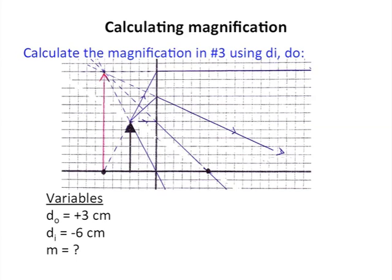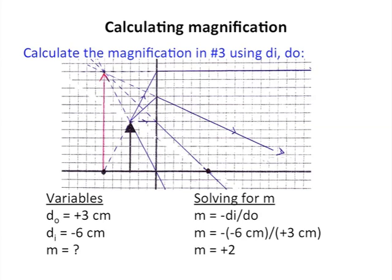An example: calculate the magnification in number 3 using image distance and object distance. The object distance is positive 3. The image distance is negative 6 — image distance is negative when it's on the same side as the object, to the left of the lens, which happens with virtual images. Calculating magnification: the negative of negative 6 divided by positive 3 gives us positive 2, as expected.